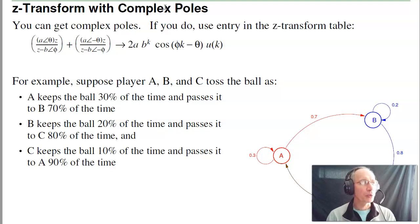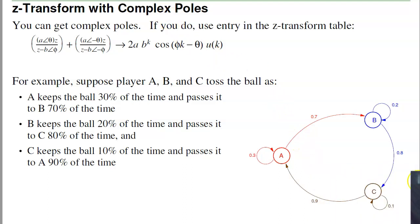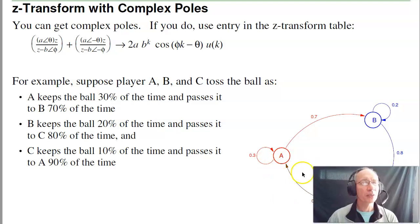Sometimes you can have complex poles. For example, if I have a ring like this, and A passes the ball to B, B passes it to C, C passes it to A, I'm going to get a complex eigenvalue. What that means is just that there's oscillations in the system. A has the ball, won't get the ball again until two more tosses, and then two tosses after that.